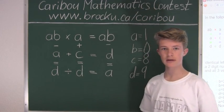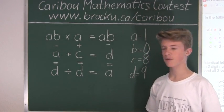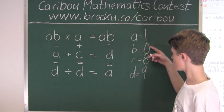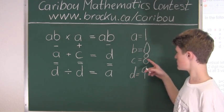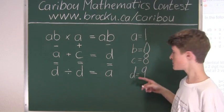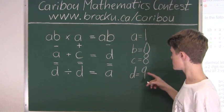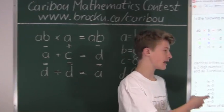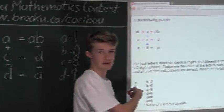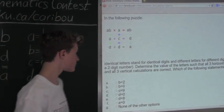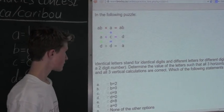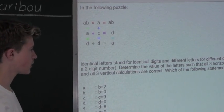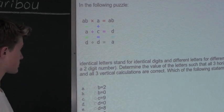Now we know all the variables: A is 1, B is 0, C is 8, and D is 9. Let's look at the options available — the question asks which of the following statements is correct.